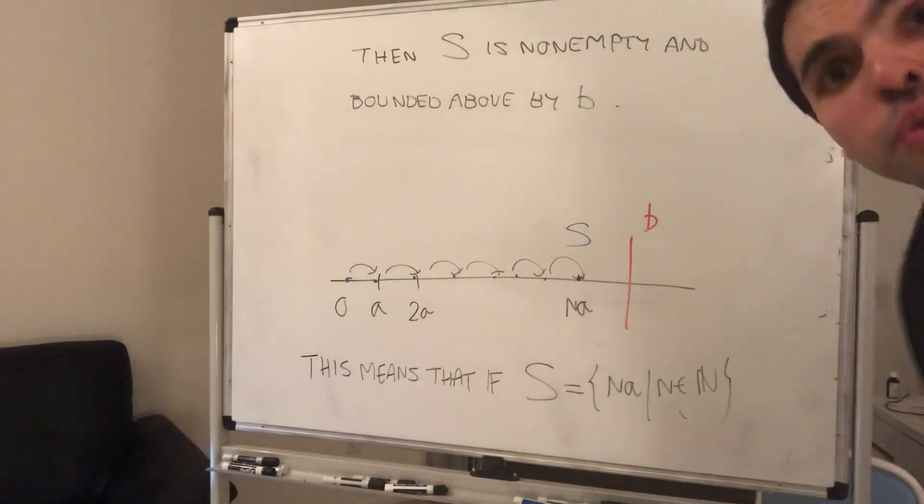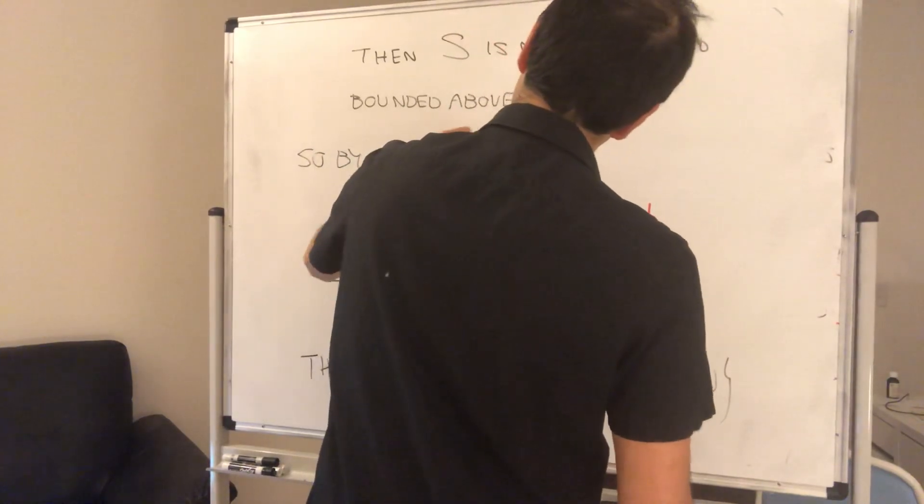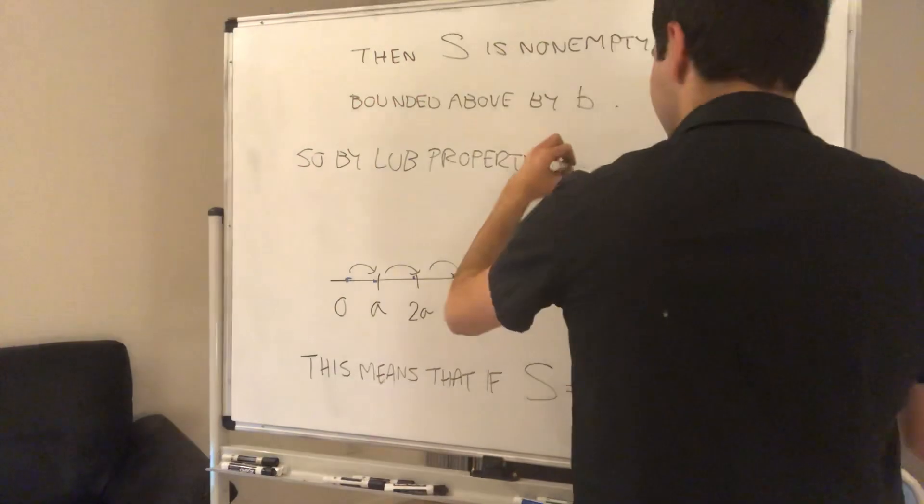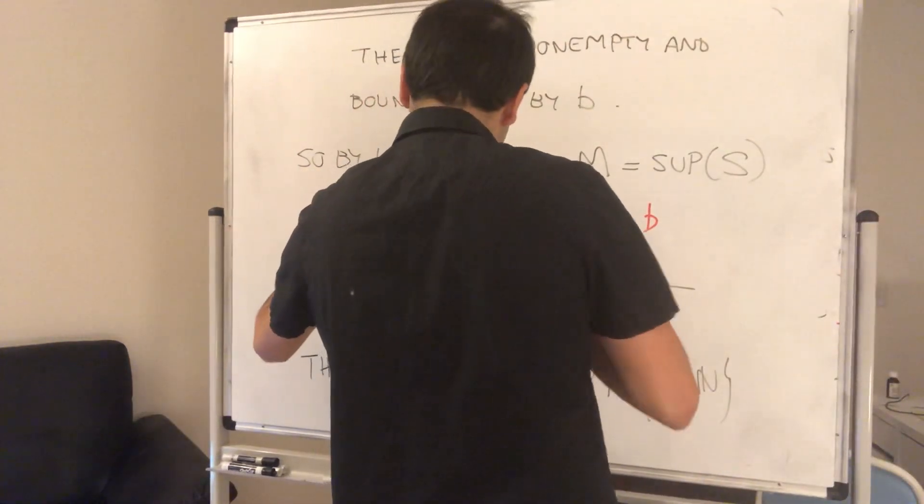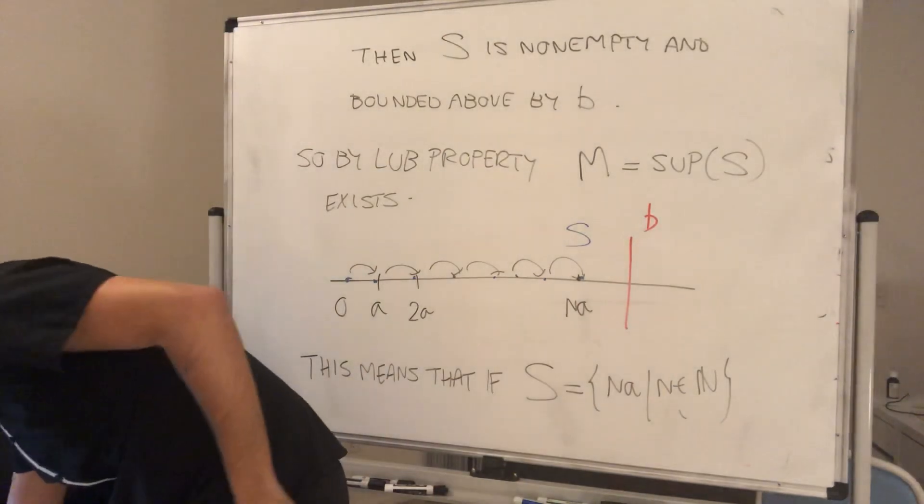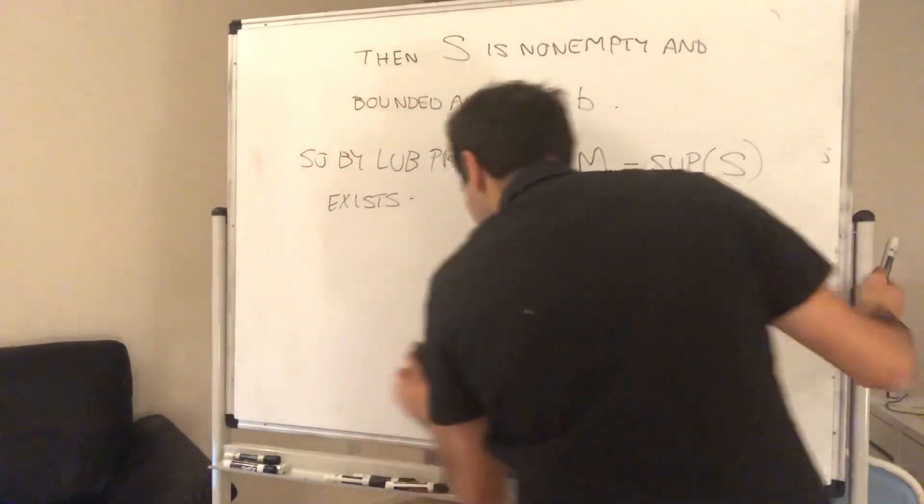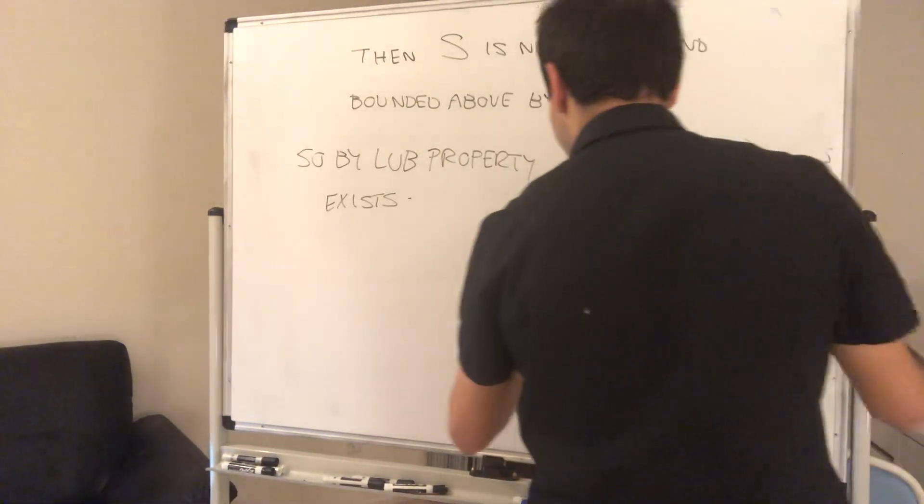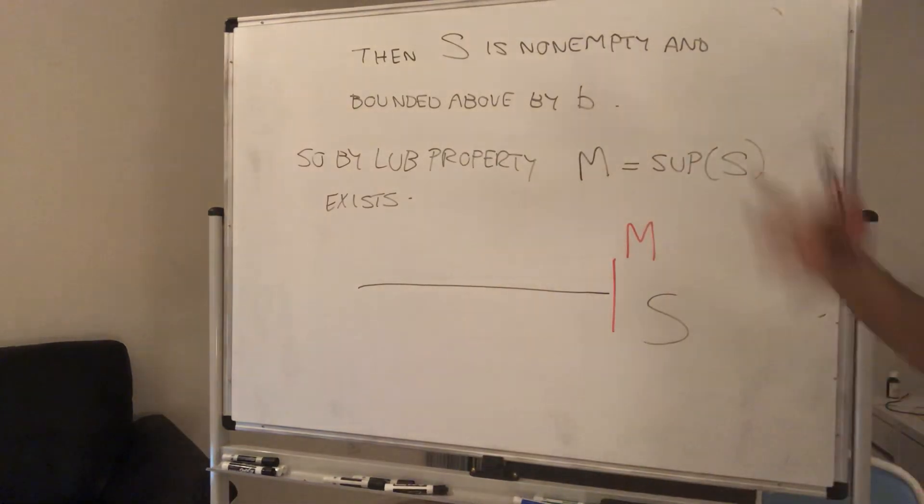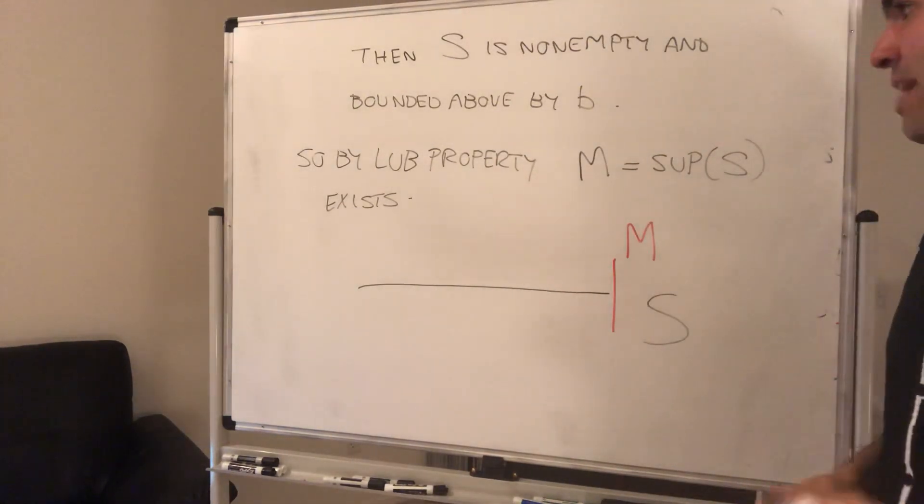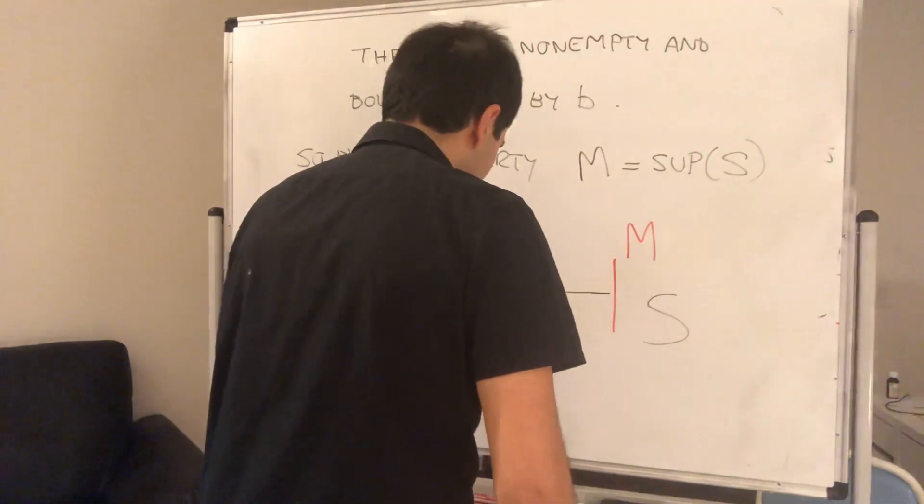So by the LUB property, the supremum of S exists. Let's call it M. And what we want to do is find some sort of a contradiction. We have our set S and we have that supremum M. And because we're dealing with multiples of A, let's consider the element M minus A. It's a very neat trick.